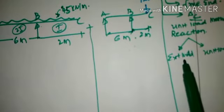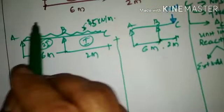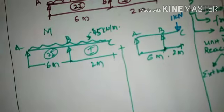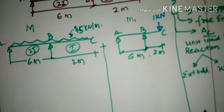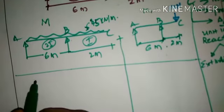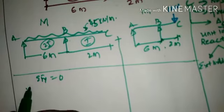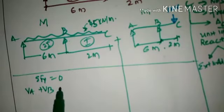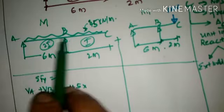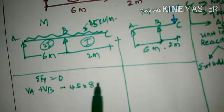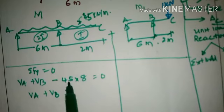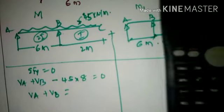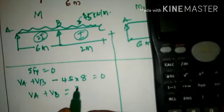We find reactions for both cases. The moment due to the external load will be called capital M, and the moment due to the 1 kN unit load will be called small m1. Applying equilibrium — summation of Fy = 0 — gives VA + VB = 45 × 8 = 360 kN, since the UDL magnitude is 45 kN/m over a total length of 8 meters. This is equation 1.